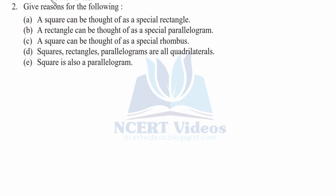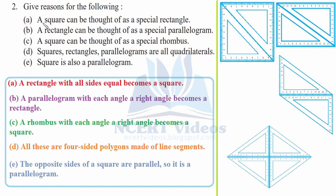Question two: Give reasons for the following. Part A - a square can be thought of as a special rectangle. The reason is that a rectangle has opposite sides equal, and if we compress it from the longer sides it becomes a square, retaining the properties of a rectangle. Therefore, a rectangle with all four sides equal becomes a square.